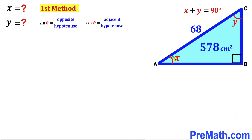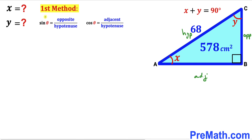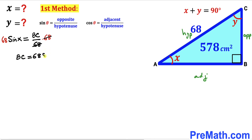For angle x, one side is the adjacent side, another is the opposite side, and 68 is the hypotenuse. Using the sine ratio, we can write sine of x equals BC divided by 68. Multiplying both sides by 68, our side BC turns out to be 68 times sine of x.